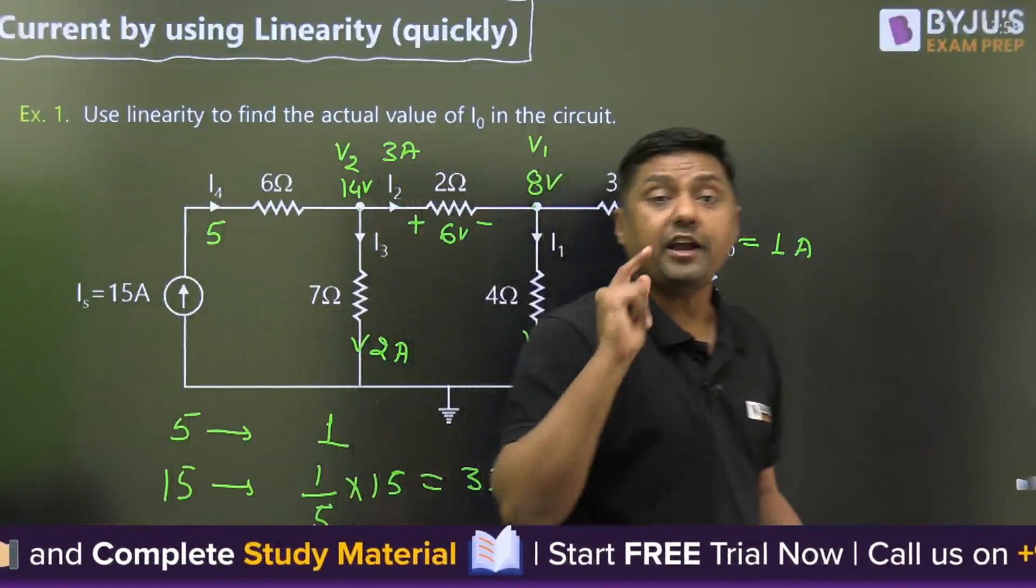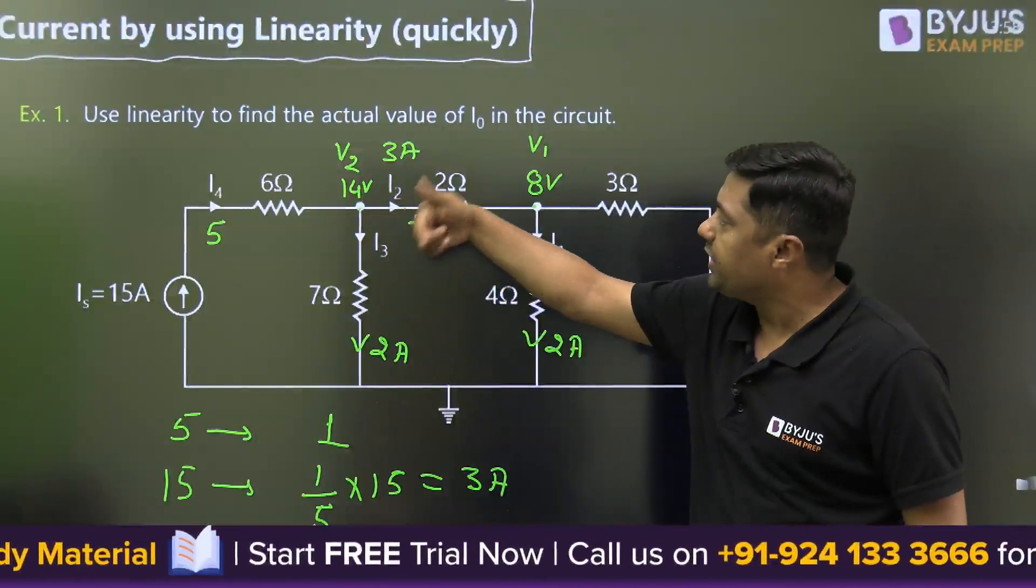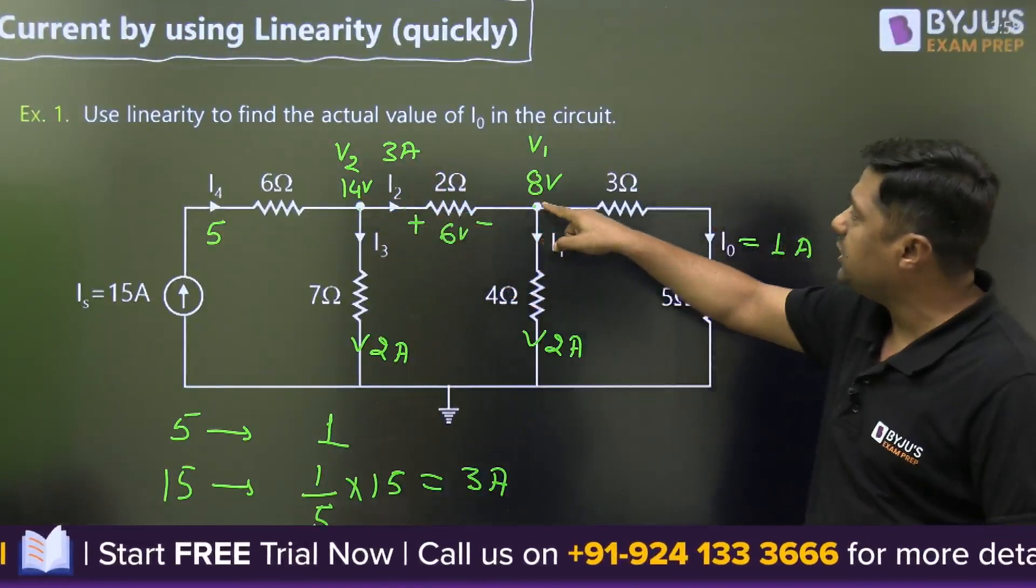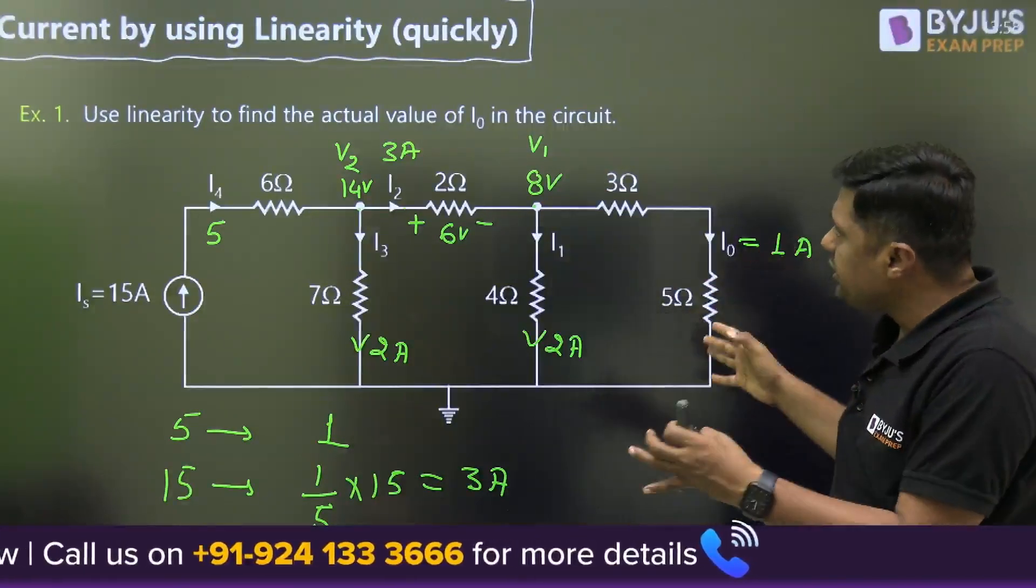You can find the nodal voltages: 14 multiplied by 3 gives you the voltage at this point, 8 multiplied by 3 is 24 volts, and so on. You can find the current through each branch and voltage across each node.